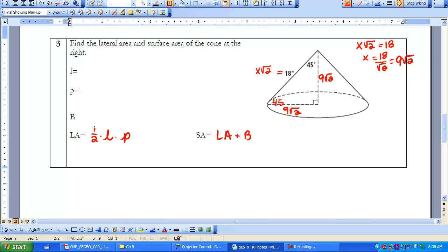So now I can go ahead and plug in some values and start calculating perimeters and areas of bases. My slant height is 18. My perimeter, once again, is the same as circumference because I'm dealing with a base that's a circle. So that's 2 times the 9 root 2 times pi, which equals 18 root 2 times pi. And then the area of the base is going to be my radius squared, which is 9 root 2 squared times pi, which gives me 162 pi.